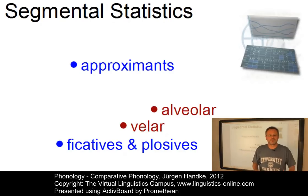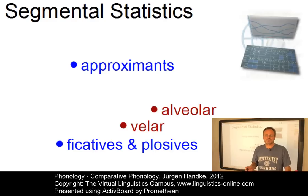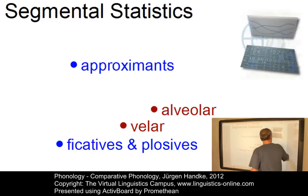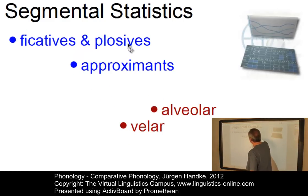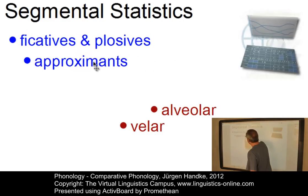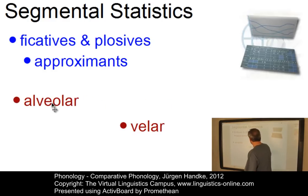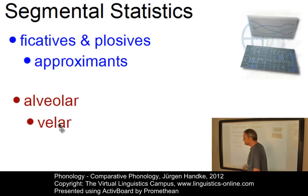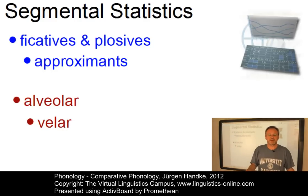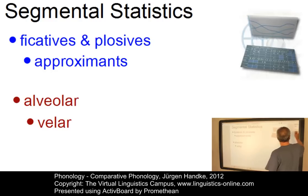Among others, comparative phonologists are interested in the frequency of occurrence of certain segments in languages. It is known that, for example, fricatives and plosives occur more frequently than approximants. Or alveolar consonants are used more often than velar consonants. These are segmental observations that we can make across the languages of the world. Or we can look at sound dependencies.